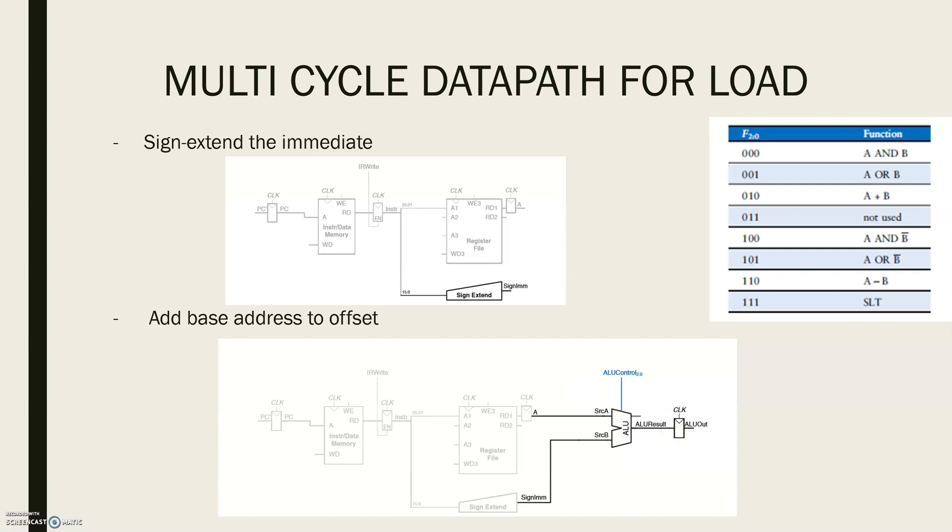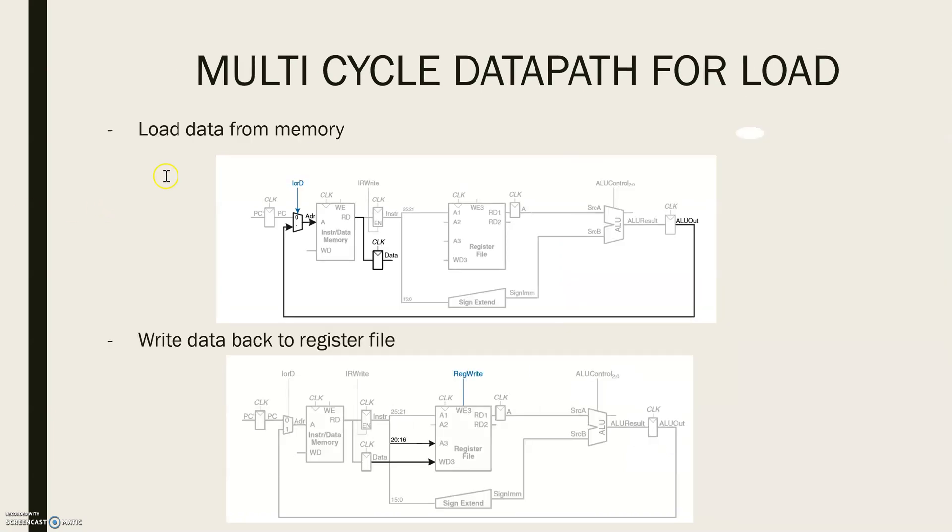The next step will be to load the data from the calculated address in memory. For this we add a multiplexer in front of the memory to choose the memory address either from the PC or the ALUOut as shown in the figure. The multiplexer select line is called IorD, which indicates either an instruction or a data address. Data read from the memory is stored in another non-architectural register called Data.